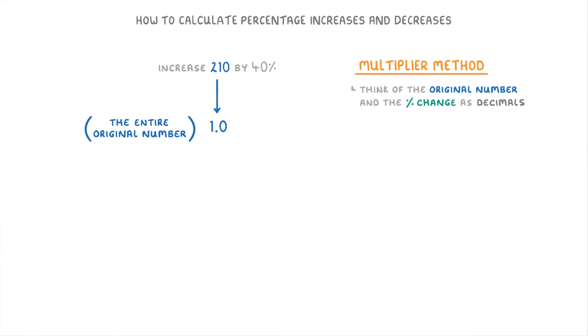Because to get percentages to decimals, we just divide them by 100. So for a percentage increase question, where we're basically trying to find 210 plus 40%, we can use these decimals instead and think of it as trying to find 1 plus 0.4. So we just add them together to get 1.4, which we call our multiplier. And then we multiply that 1.4 by the original 210 to get an answer of 294.